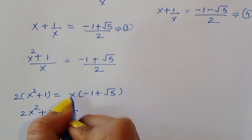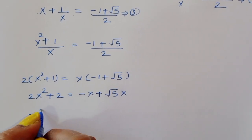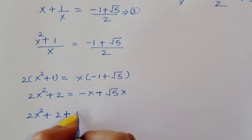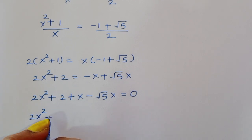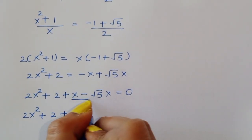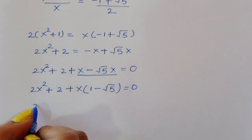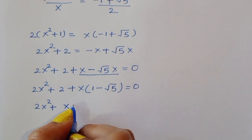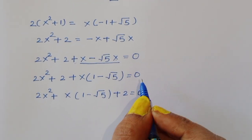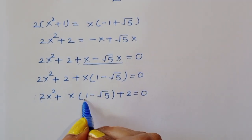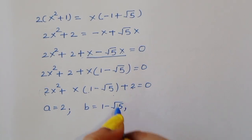Expanding: 2x^2 plus 2 equals minus x plus root 5 times x. Rearranging: 2x^2 plus x(1 minus root 5) plus 2 equals 0. Here the coefficients are: a equals 2, b equals (1 minus root 5), and c equals 2.